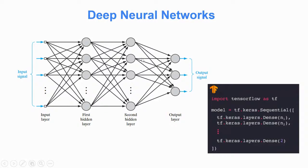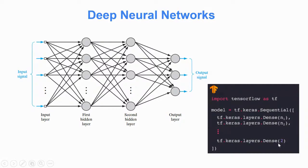Adding more and more layers creates deep neural networks — this is how we build more complex networks to handle complex classification or clustering tasks. For example, with input, first, second, and third layers we can classify into three classes. In TensorFlow, we use the sequential model and define a list of dense layers — N1 nodes in the first, N2 in the second, and so on — with the final output layer having two or three nodes depending on the problem.